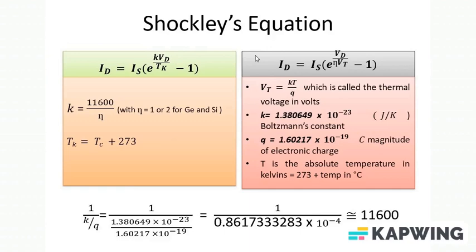Vt is equal to kT by q. Let's put all these values. k is equal to this thing here, 1.38 × 10^-23, q is equal to one more constant. Let's calculate this term, 1 upon k over q. Let's calculate this term. The moment we put all these values, use a scientific calculator if you have and calculate at your end, and you will come to know that this term in the equation is approximately 11,600.